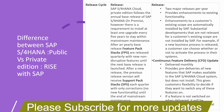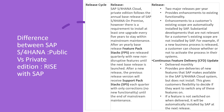In public edition there are two major releases per year. Enhancements to a customer's existing scope are automatically installed by SAP. Additionally, continuous feature delivery updates are provided monthly, offering pre-delivery of new features made available in the SAP S/4HANA Cloud system without automatic installation — giving customers flexibility to decide whether to switch on any of these features. If a feature is not switched on when delivered, it will be automatically installed by SAP in the next release.